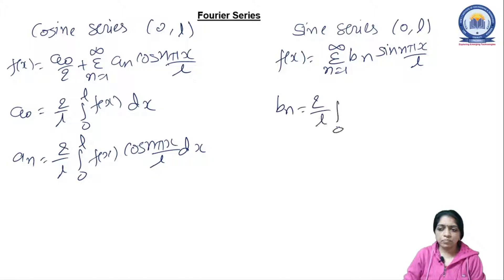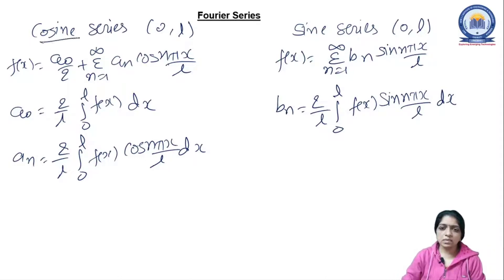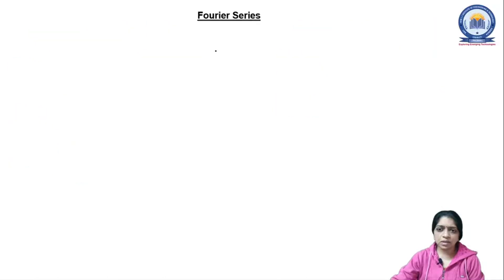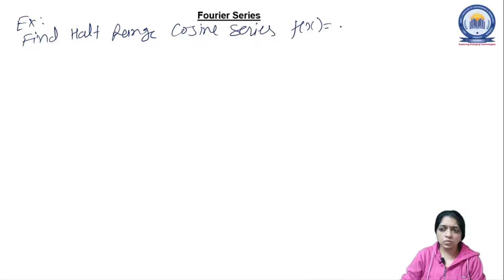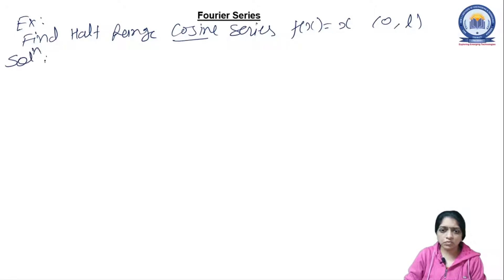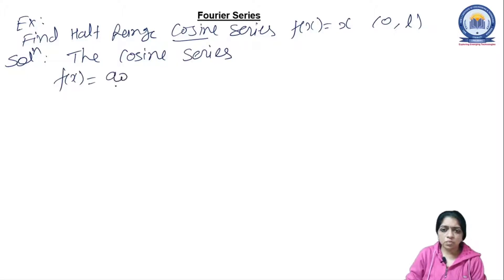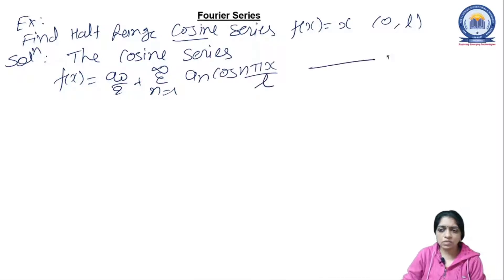So these are the formulas for the sine series and cosine series in the interval 0 to L. Let's start the first example: find the half range cosine series of the function f(x) = x in the interval 0 to L. As we want to find the cosine series, the formula is f(x) = a₀/2 + summation n=1 to infinity of aₙ cos(nπx/L). This is equation 1.